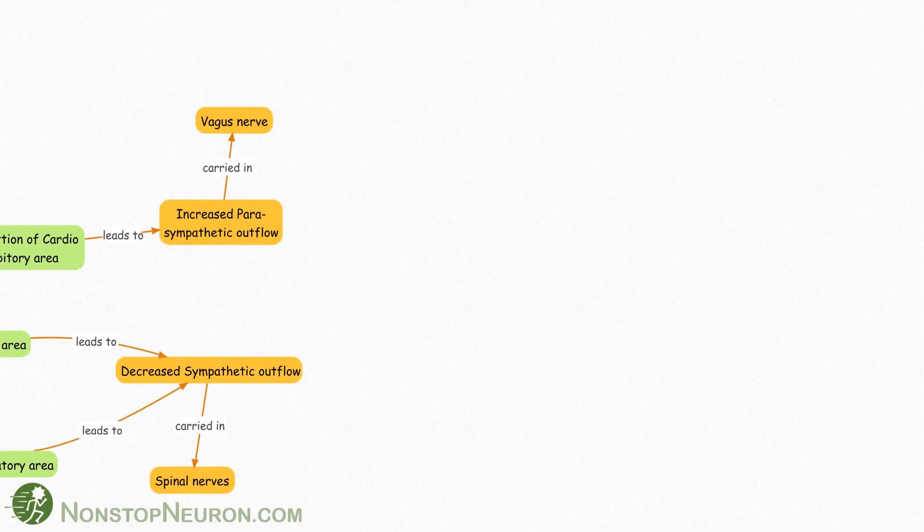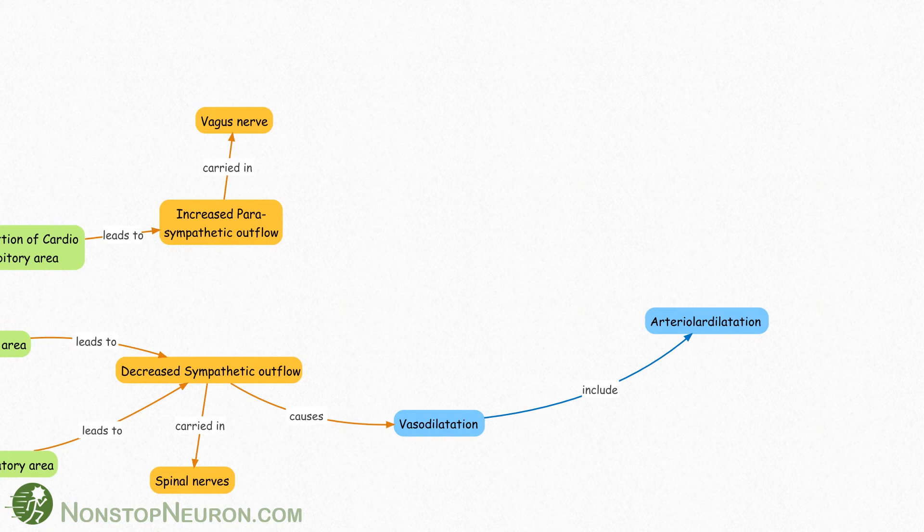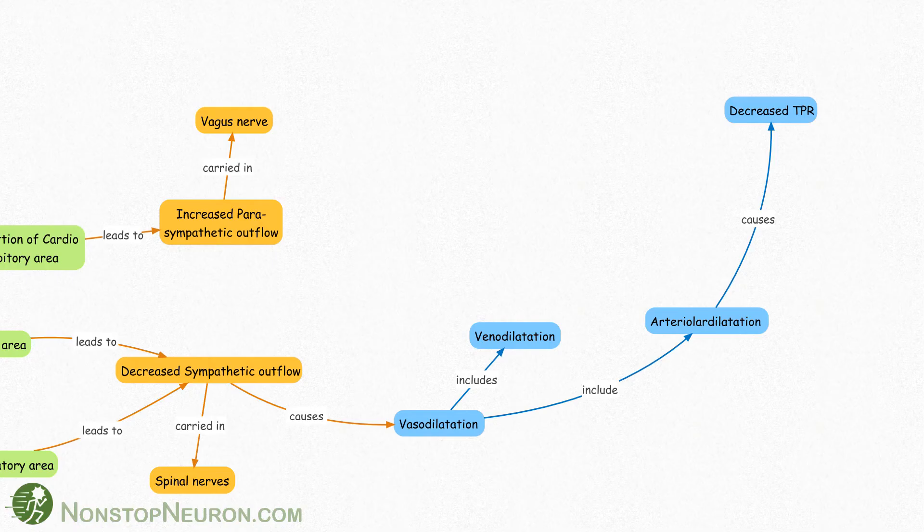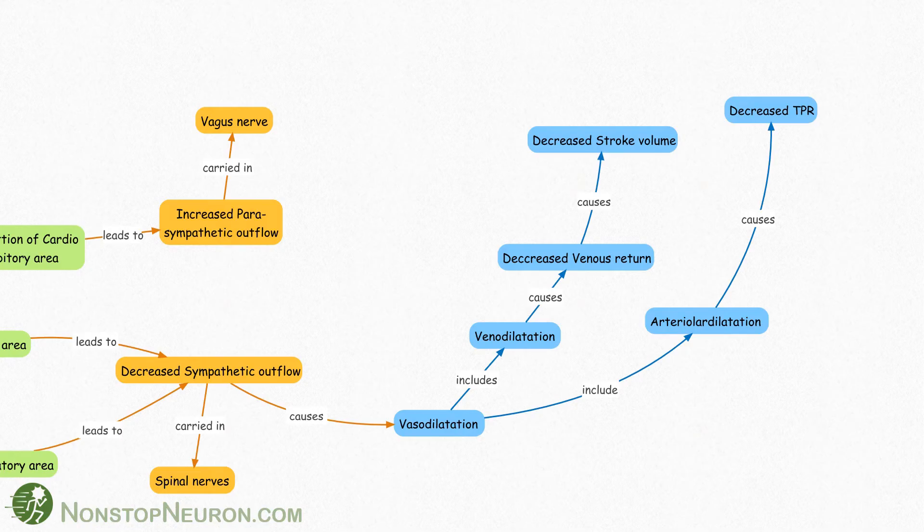Due to decreased sympathetic outflow, there will be vasodilation. It includes arteriolar dilation as well as venodilation. Arteriolar dilation decreases total peripheral resistance. Venodilation causes decreased venous return which in turn decreases stroke volume.